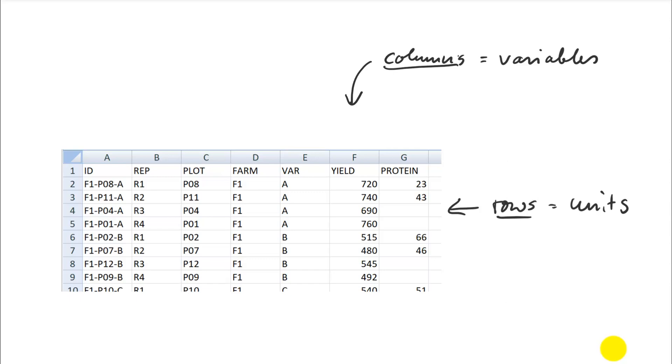And rows represent units. And so what's implied by units is that they are independent entities. So they are study subjects. They can be plots. They could be animals. They could be locations. They could be trees. So they are objects that are independent of each other. And there are two types of these units. One of them you call experimental and the other sampling units.